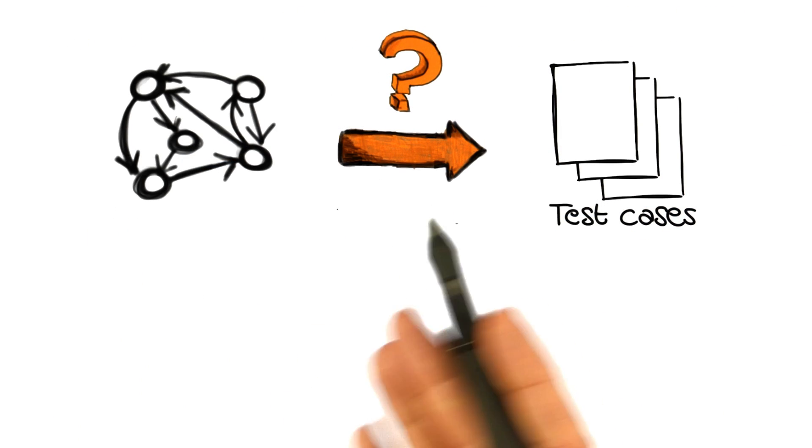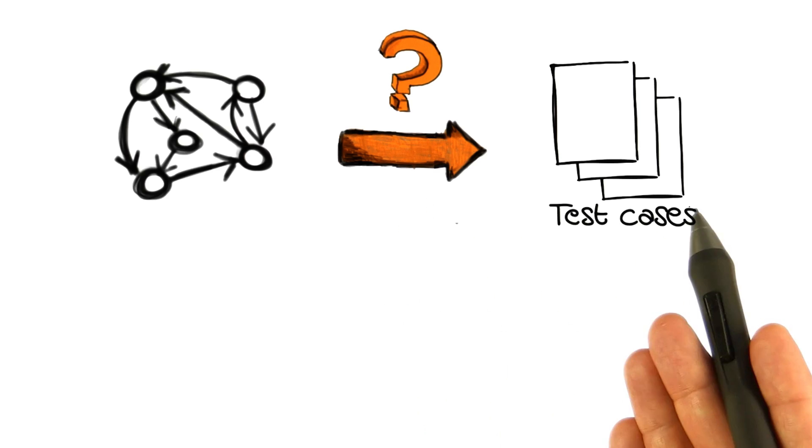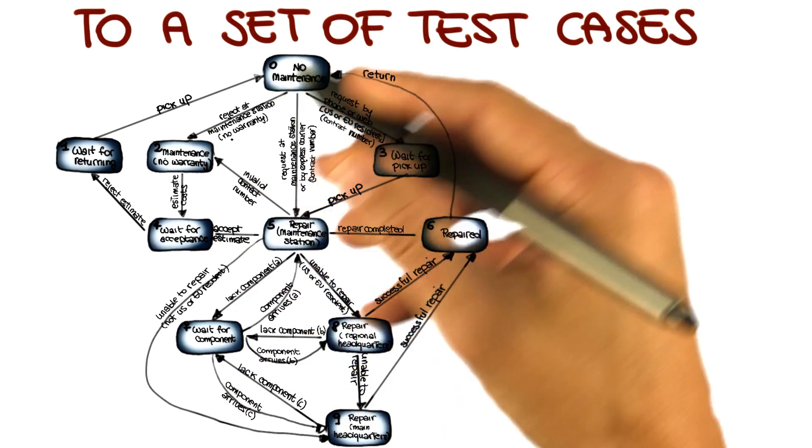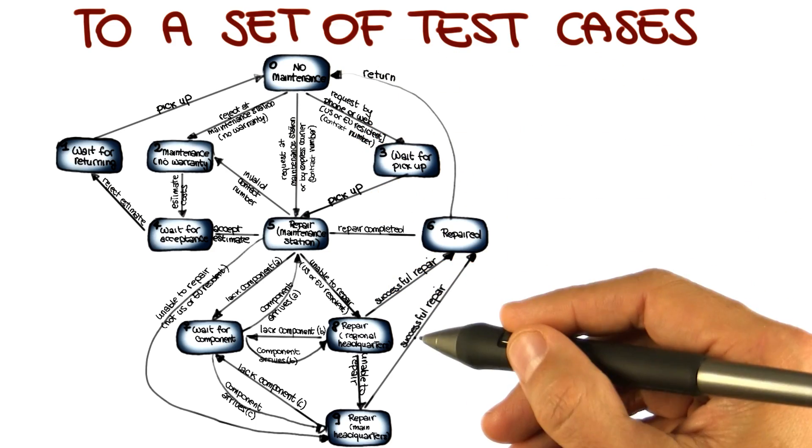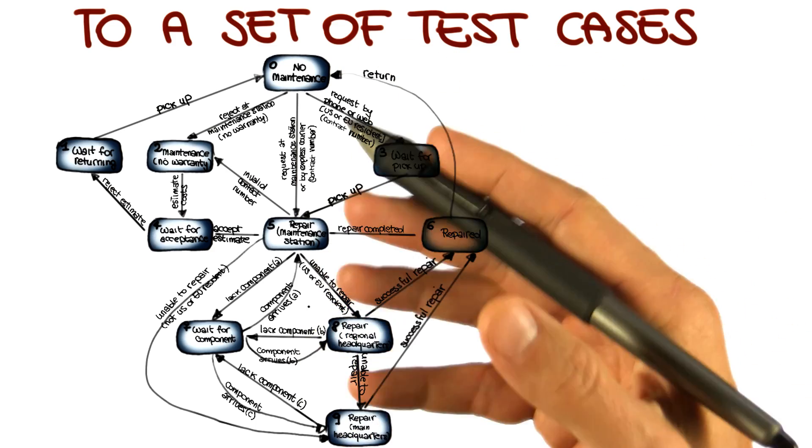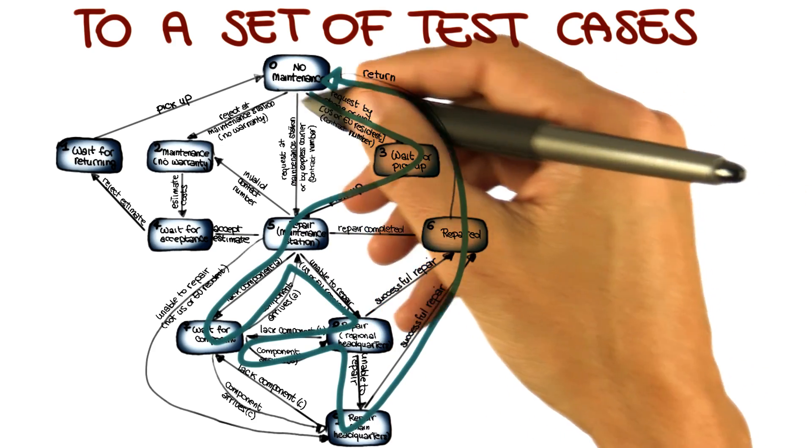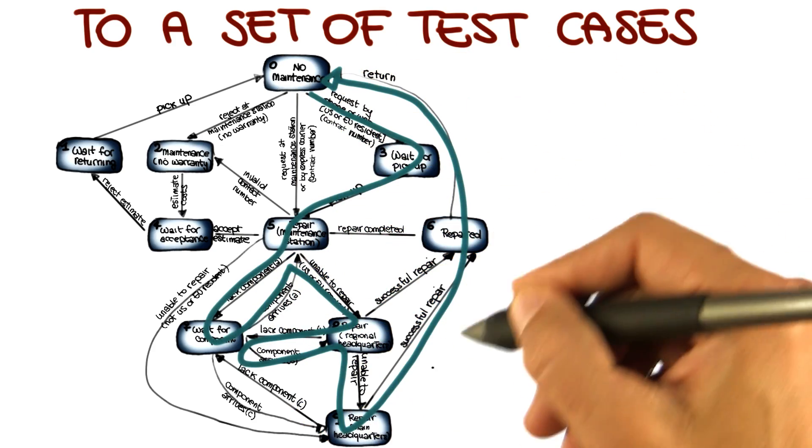In fact, what we're going to see next is how we can go from that representation to a set of test cases. The way in which we do it is by covering the behaviors represented by the finite state machine. And we can decide how we want to cover them. For example, we might want to cover all the states.